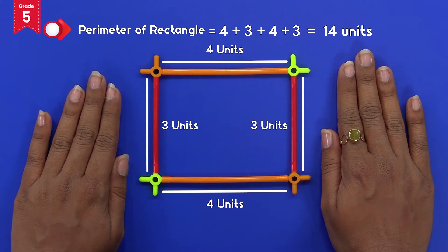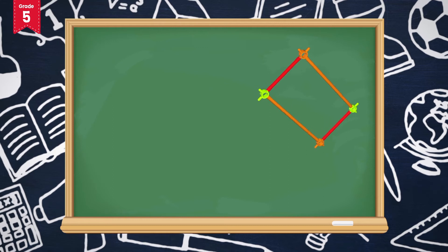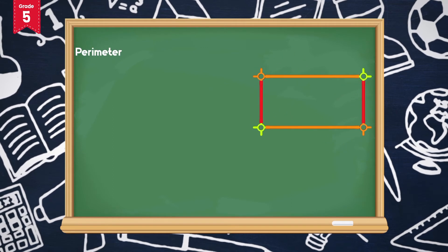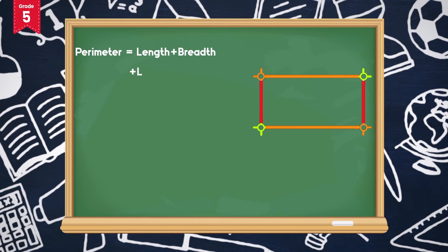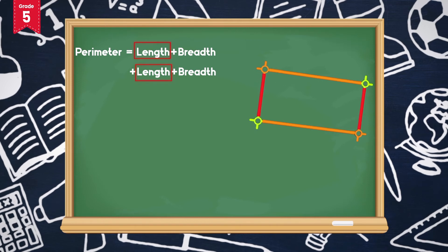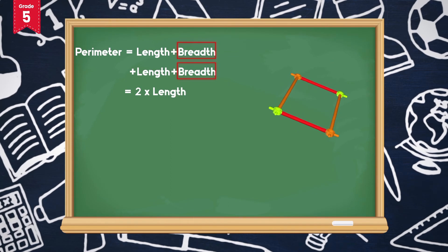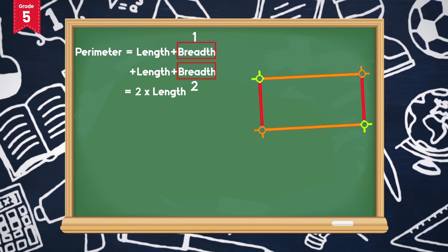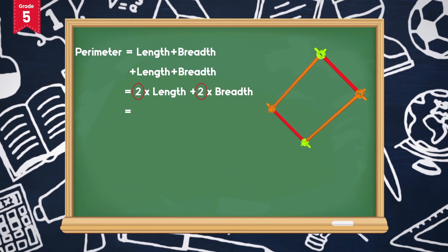We have calculated the perimeter of this rectangular shape without using the formula. To find the perimeter we added length + breadth + length + breadth. We can see that the length is added twice, so we can write it as 2 multiplied by length. Similarly, the breadth is added twice, so we write it as 2 multiplied by breadth. We can then take 2 as a common factor.